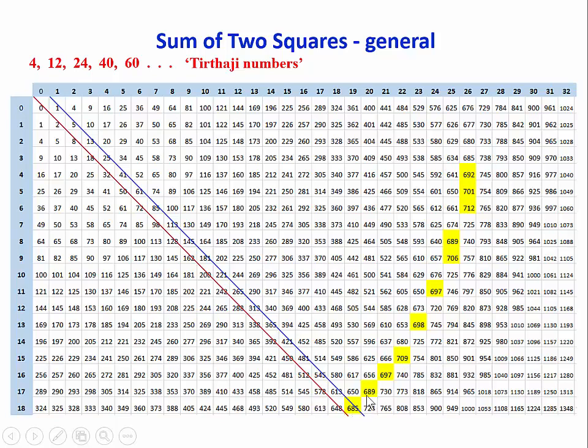And if you take the differences of each of these numbers from the bottom number there, 685, you'll see they are the Tirthaji numbers. So the difference here is 4. The difference between 697 and 685 is 12, and so on.